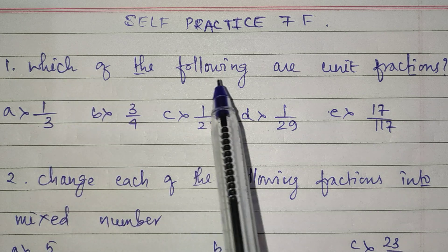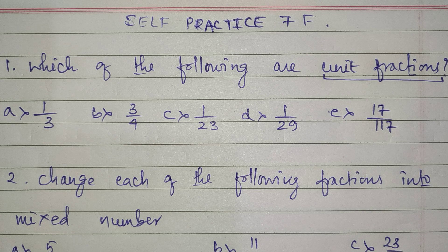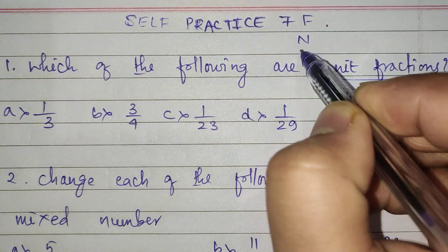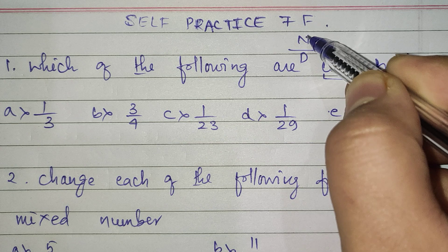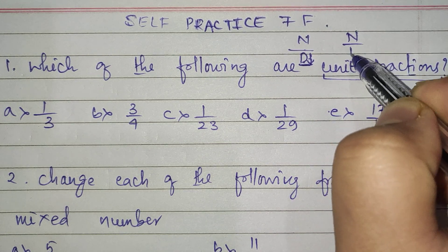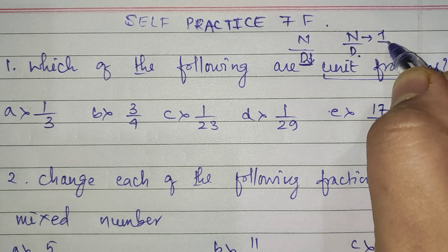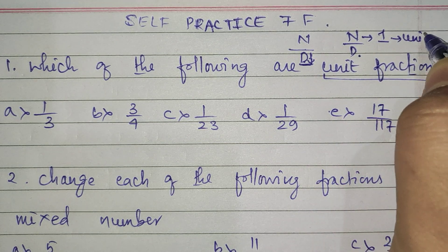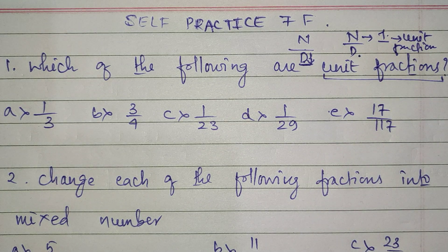In question number one we have: which of the following are unit fractions? So what is a unit fraction? This is a very new term to you. A unit fraction is a fraction which has one as the numerator. In a fraction, the top part is your numerator and the bottom part is the denominator. Numerator over denominator makes a fraction. If you have the numerator as 1, then that fraction is considered a unit fraction.